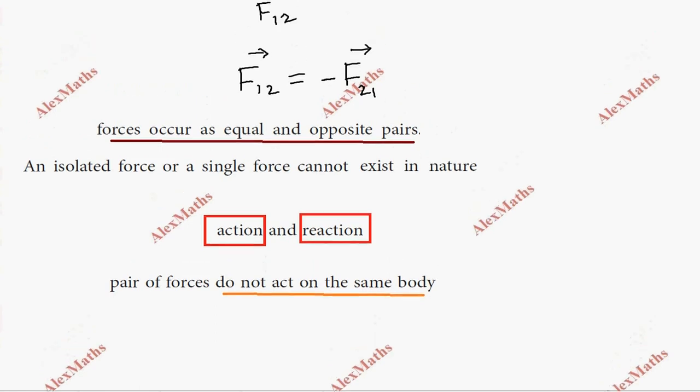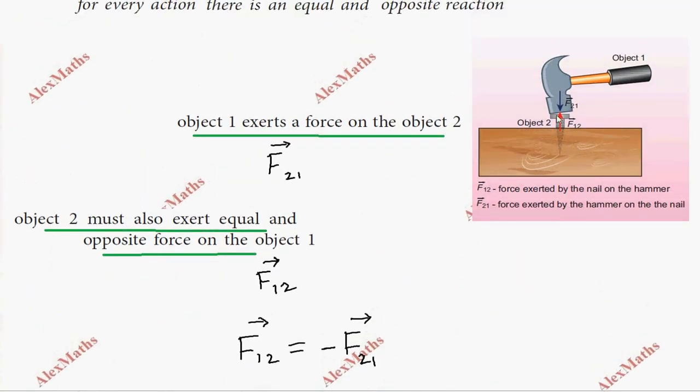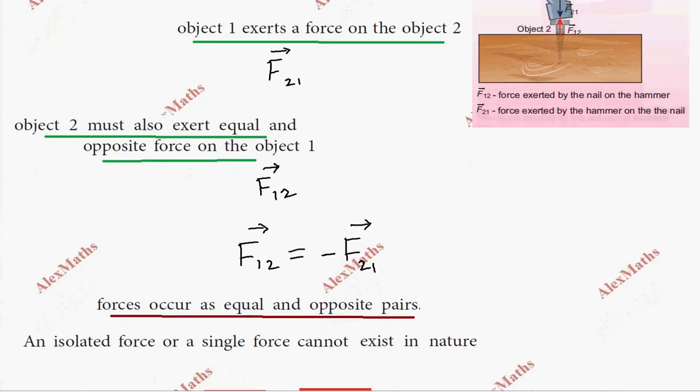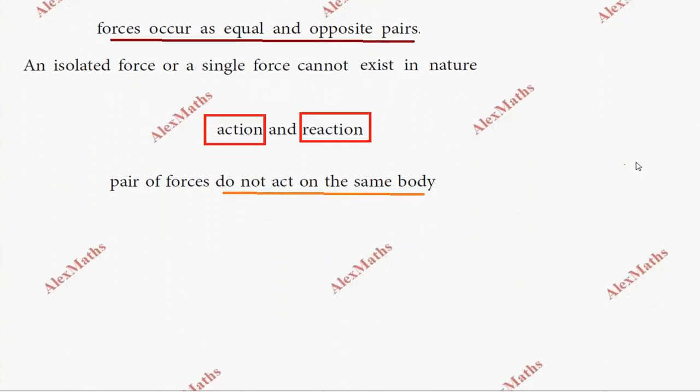The pair of forces do not act on the same body but on two different bodies. For example, with a hammer and nail, the force exerted by the nail on the hammer and the force exerted by the hammer on the nail act on two different bodies.